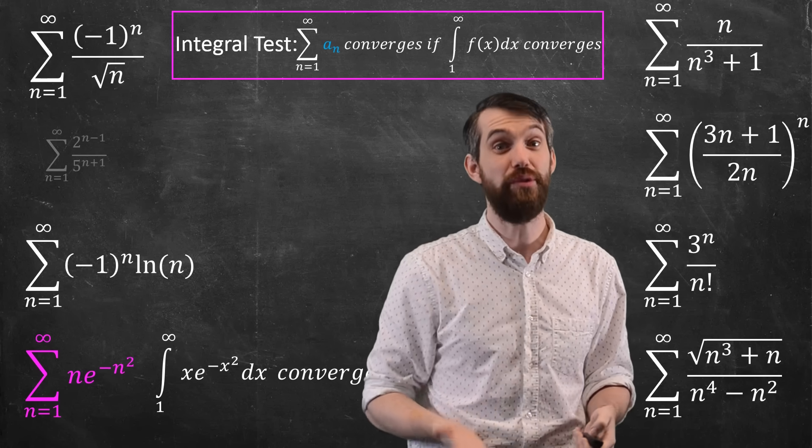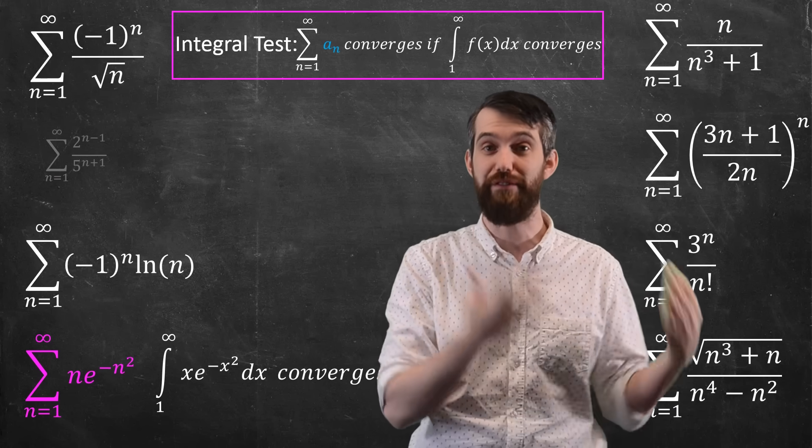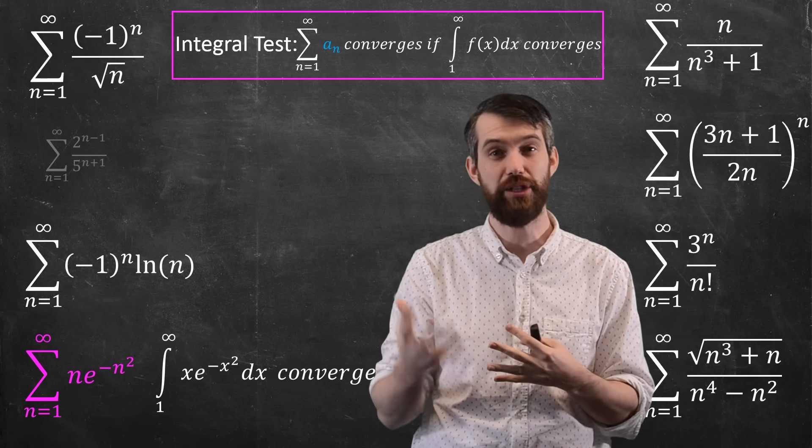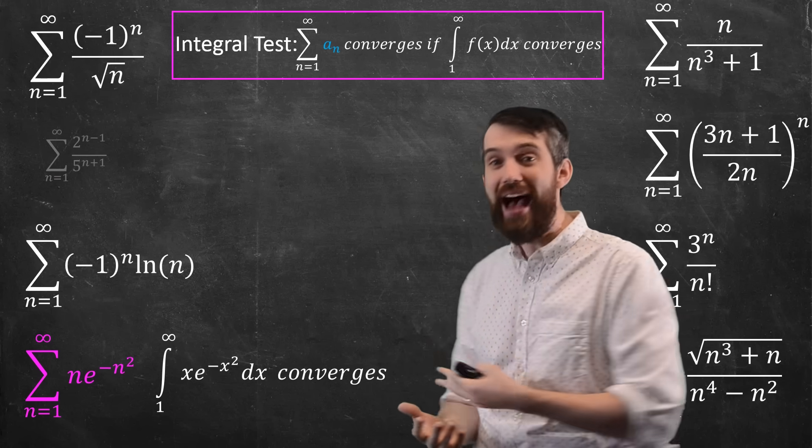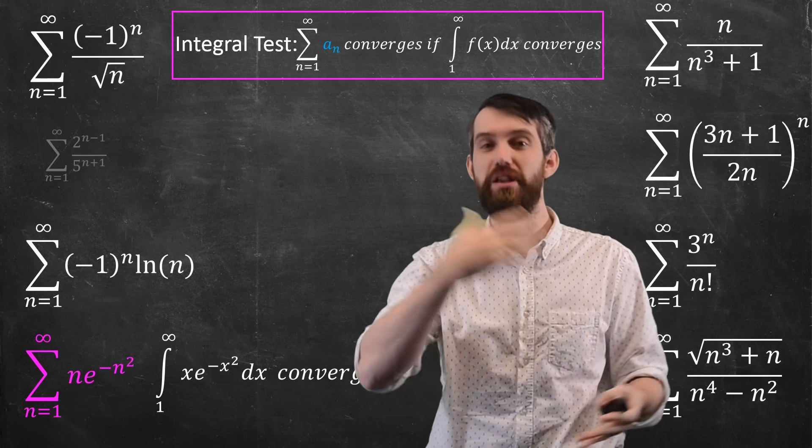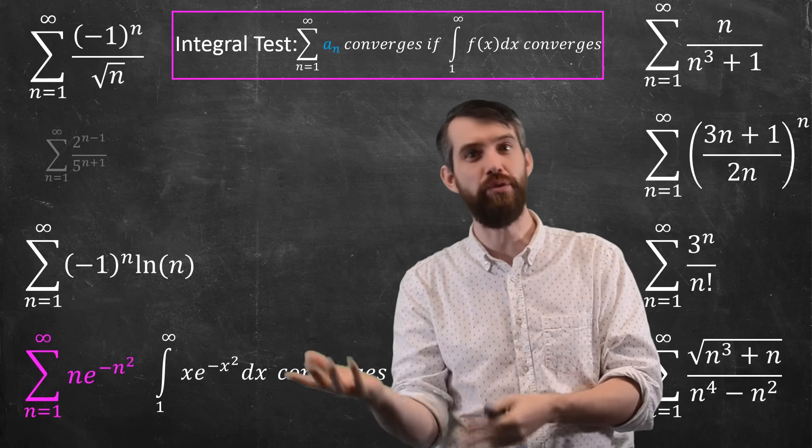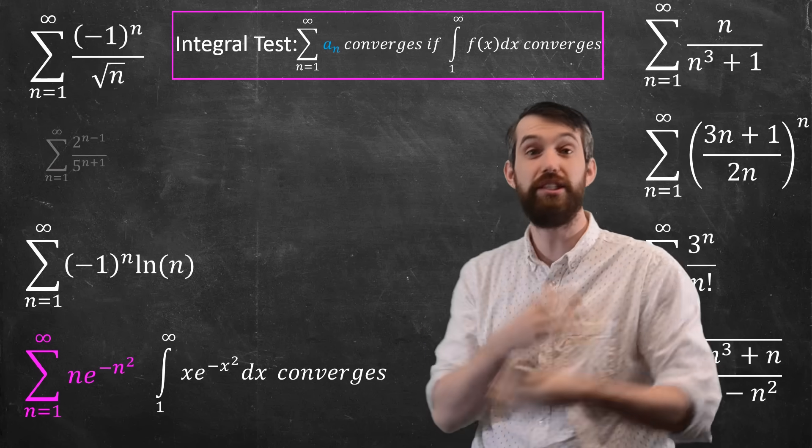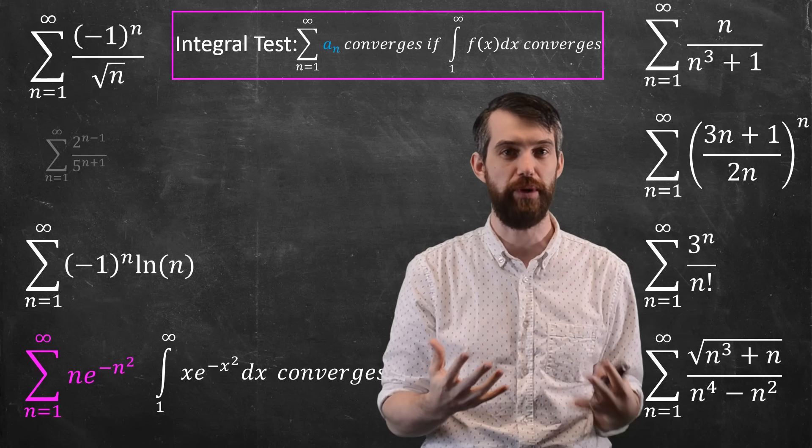In this scenario, if I consider the improper integral 1 up to infinity of xe^(-x²), well, for that, I can do this, it's going to be a use of u-substitution. It will take a little bit of work, you can see my full solution at the end, but I could do this, it's going to turn out to converge, and so too does the original.